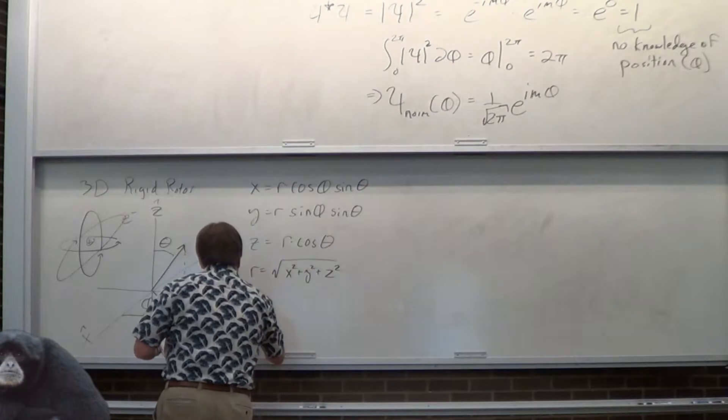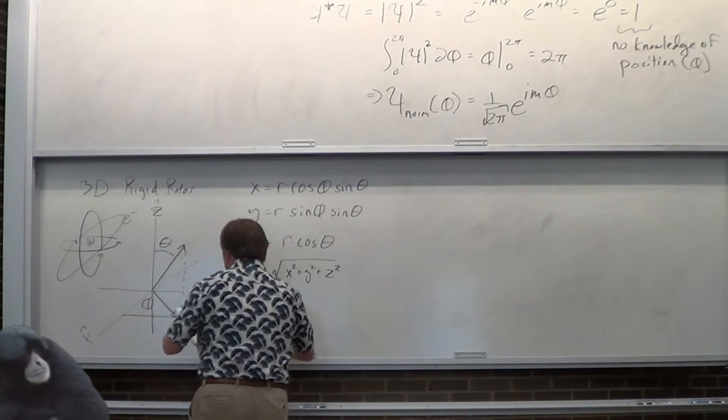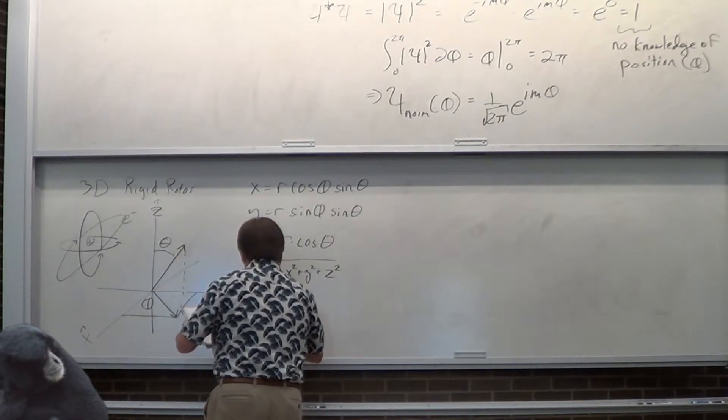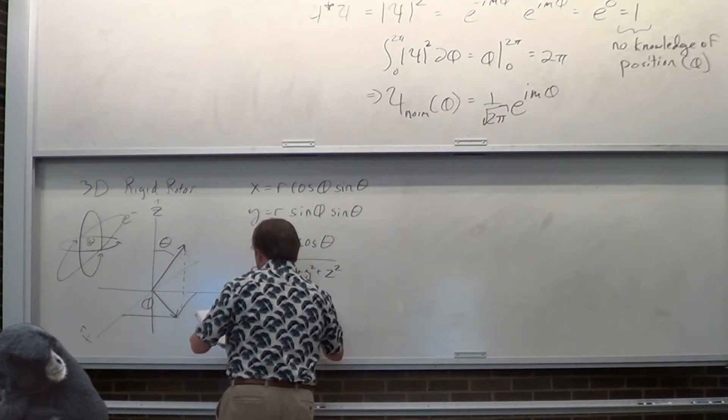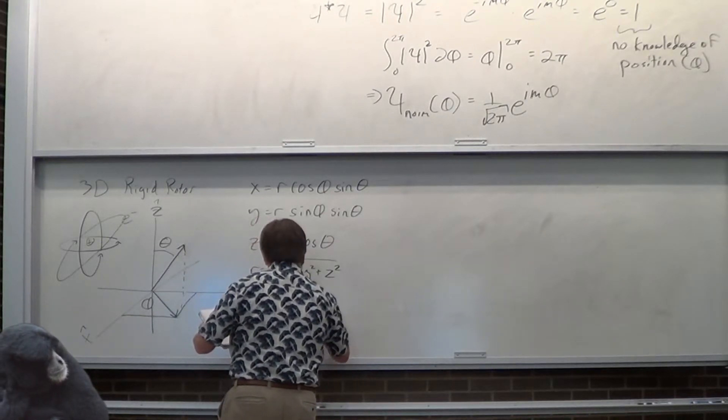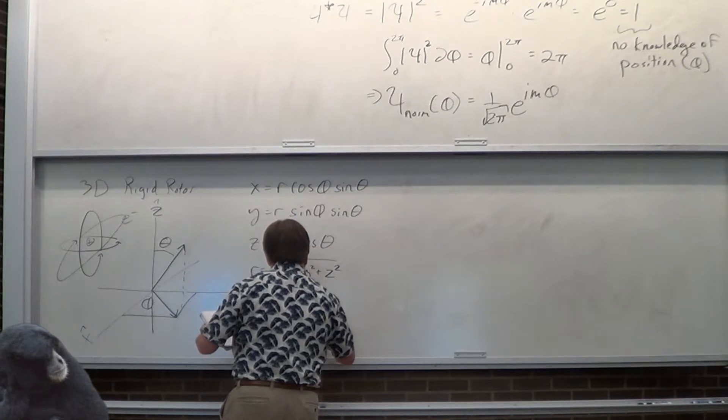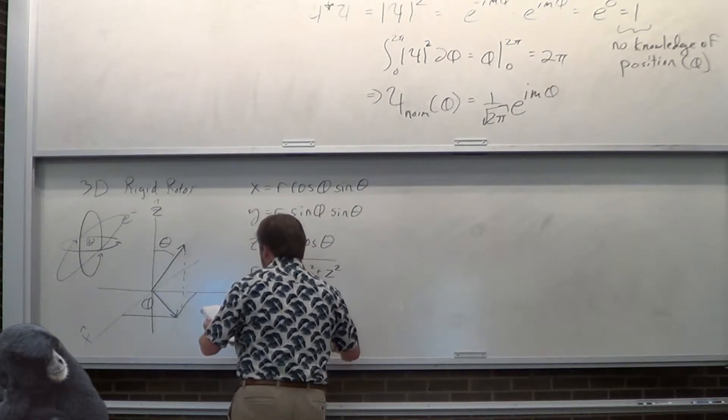Theta is arccos(z/r). That one's always a little bit easier. And phi — don't worry about these, I'm not going to have you rederive this.